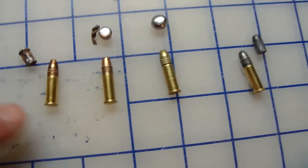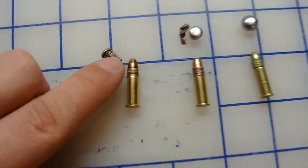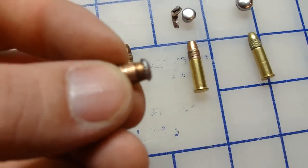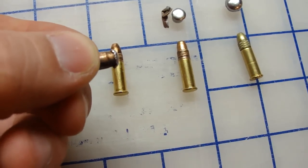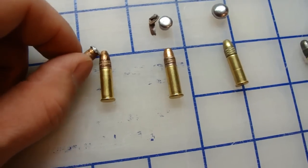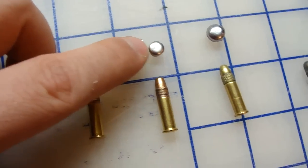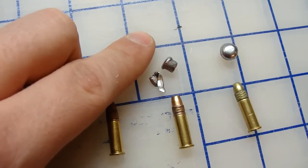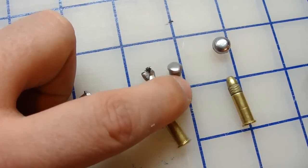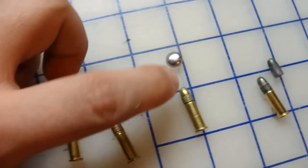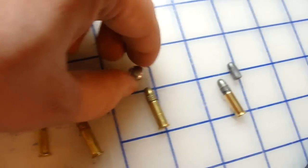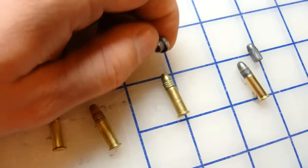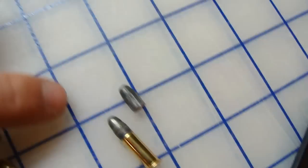And here we are all dug out. There's your Federal. There's your Winchester, that was that fragment I pulled out. There's another one back in the middle of the block, a little piece as well. That's your Remington Golden Bullet, and there's your Blazer.